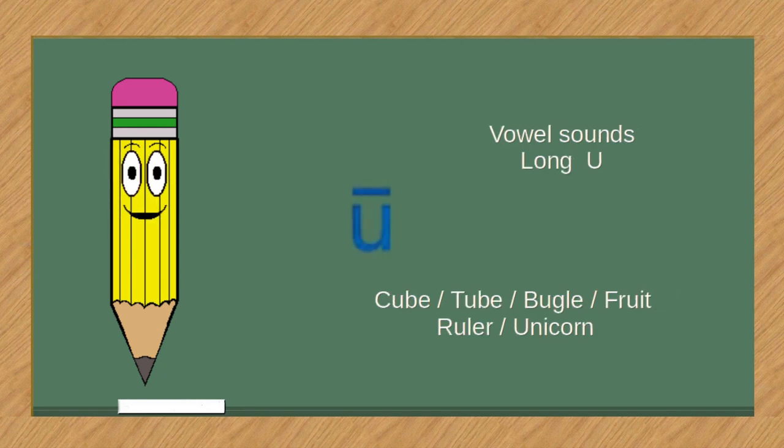Vowel sounds, long U. Cube, tube, bugle, fruit, ruler, unicorn.